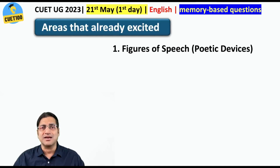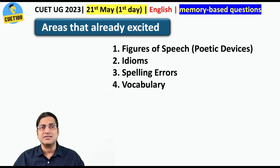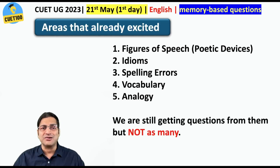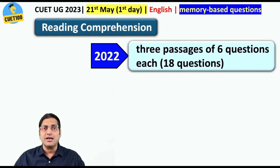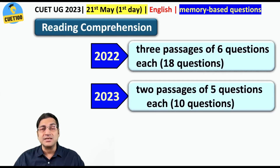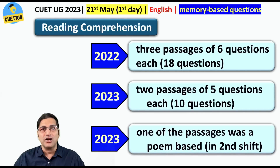Areas that already existed — like figures of speech and poetic devices — were absent in the first shift on the very first day, though the second shift had a few questions from this. Idioms, spelling errors, vocabulary, and analogy: we are still getting questions from them but not as many. Last year it was a standard structure with four questions from almost each area. Now there are shifts where you get just one idiom or one analogy. Last year every slot had three reading comprehension passages of six questions each — 18 questions total. But this year just two passages of mostly five questions each. In one shift, one of the passages was actually a poem.